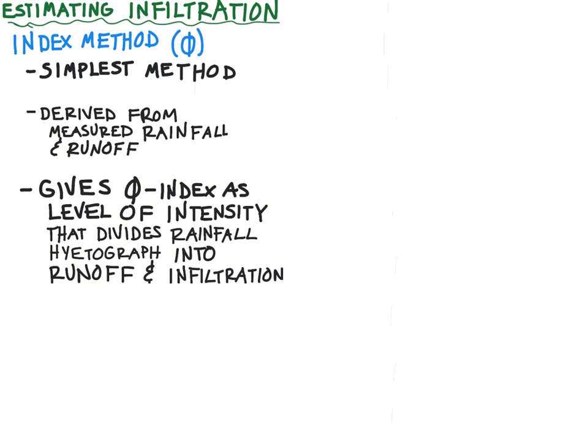And so what this method does is it gives a φ-index as a level of intensity that divides a rainfall hyetograph into an amount of water that becomes runoff and leaves the watershed through surface flow, and then a second amount that leaves the watershed as infiltration into subsurface flow.